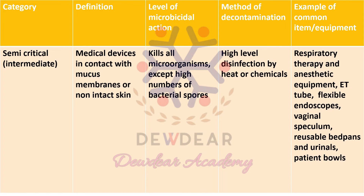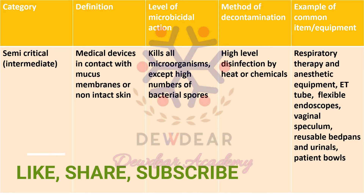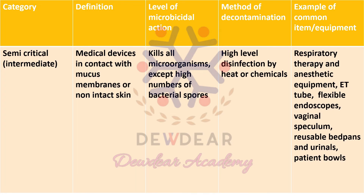Examples of semi-critical items include respiratory therapy and anesthetic equipment, endotracheal tube, flexible endoscopes, vaginal speculum, reusable bed pans and urinals, and patient bowels. These are all the examples for the semi-critical devices — the devices that come in contact with the mucous membrane or non-intact skin.